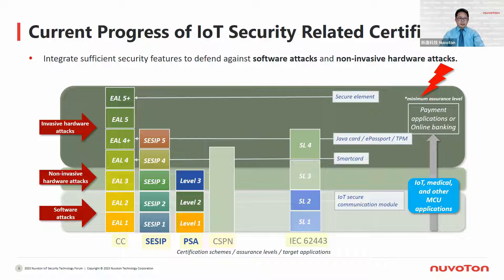Here we listed the currently progress of IoT security related applications. This slide will help you understand how to integrate sufficient security features to defend against software attacks and non-invasive hardware attacks. Here we listed CC, CSEP, PSA, CSPN, and IEC 62443, and the layer levels for matching software attacks, non-invasive hardware attacks, and invasive hardware attacks. In particular, we want to address CC and PSA, as these two standards are getting popular for IoT applications.